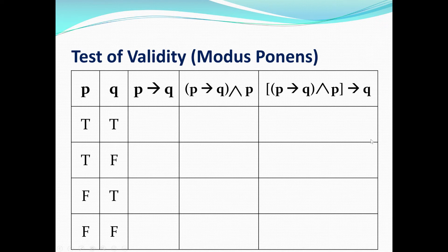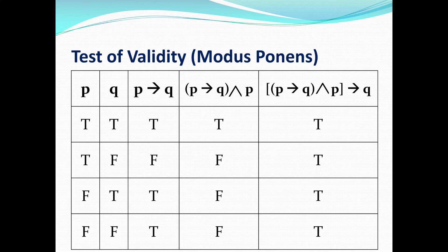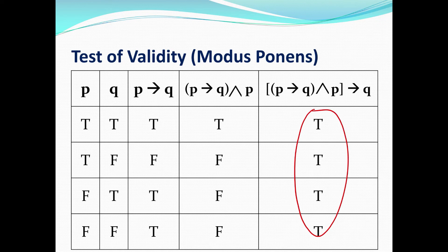So let's go over it. The truth values for the conditional if P then Q have only the second row as false. If you take the conjunction between P and if P then Q, you end up with true, false, false, false. And finally, if you take the conditional statement between that fourth column and Q, you end up with all true statements — a tautology. When it's a tautology, that means it's actually a law — it always works. Therefore, modus ponens is a law of inference.